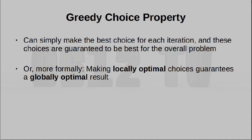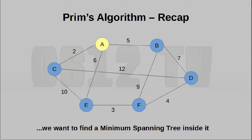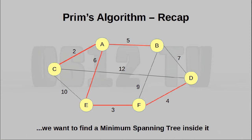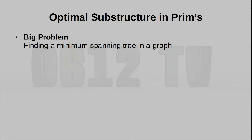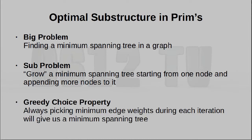Let's go with Prim's algorithm, something we've seen before. As a quick summary: you start off at any starting point and basically grow your minimum spanning tree by picking the shortest edge from the existing tree itself, selecting vertices as you move along. The big problem is to find a minimum spanning tree. The sub-problem is that we already have a little minimum spanning tree inside our graph, and our sub-problem is to expand it by one node. This algorithm also follows the greedy choice property — we simply need to pick the minimum each time, and the result at the end of the day is also minimized.